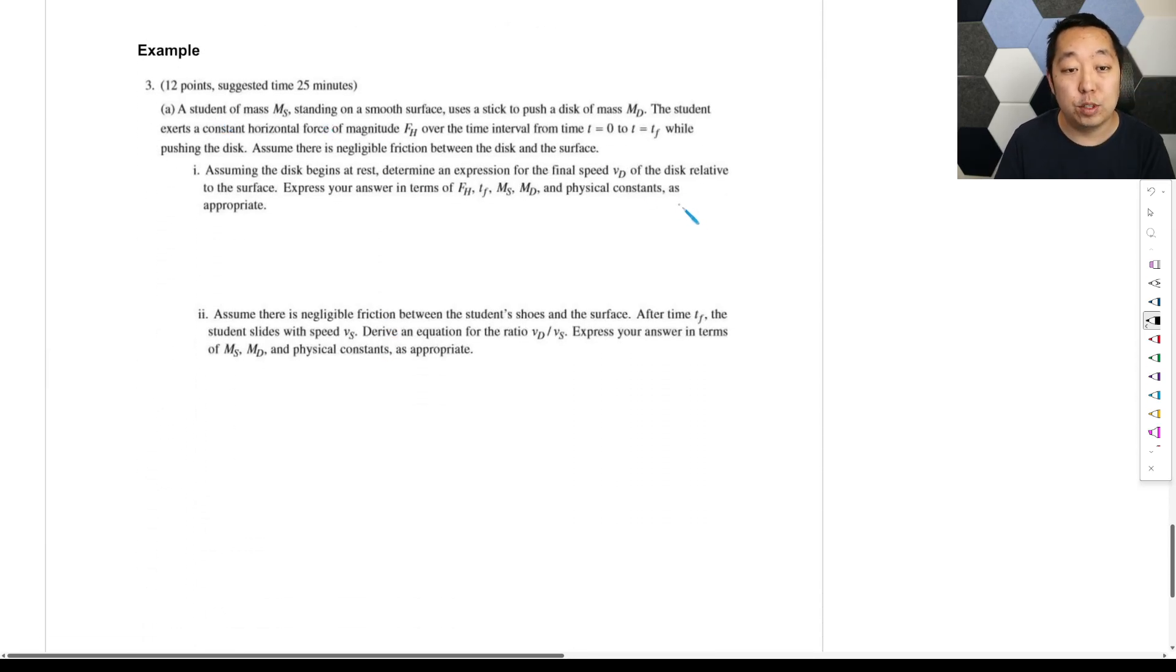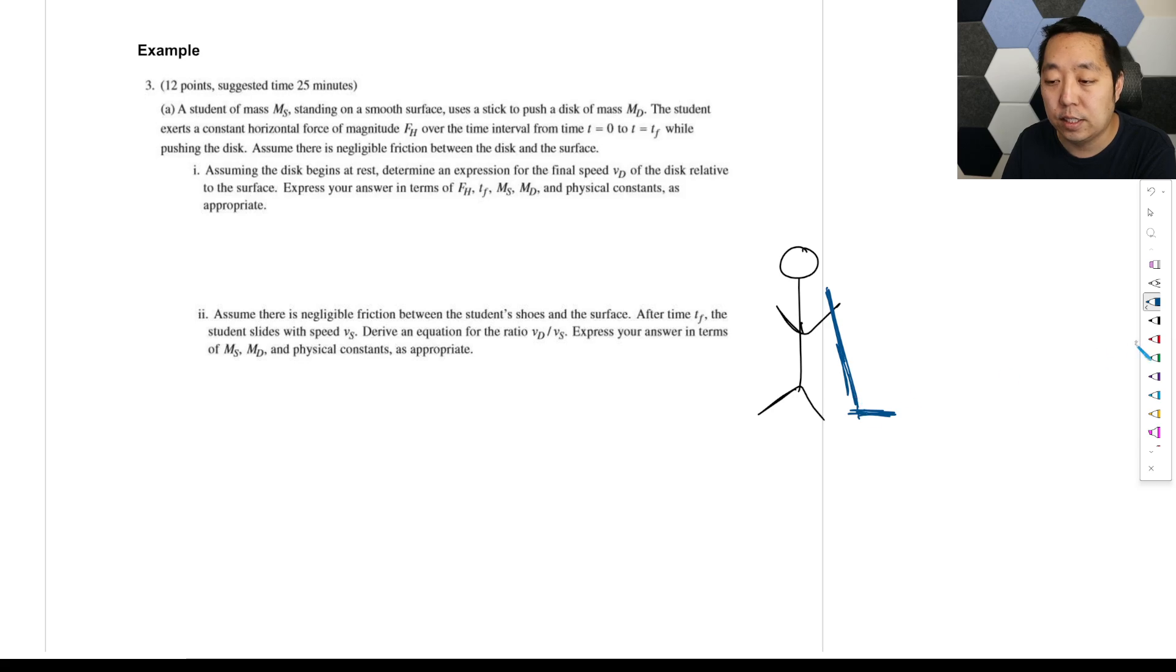And let's take a look at another problem here. So a student of mass MS is standing on a smooth surface, uses a stick to push a disc of mass D. So let's draw like a nice little picture. We have this guy. He's got a little, we'll put it, we'll make a stick, like we'll make it like a hockey stick, okay? He's a hockey stick here. He's going to push this disc here, okay? So he has a mass MS. This has a mass MD. The student exerts a constant horizontal force FH.